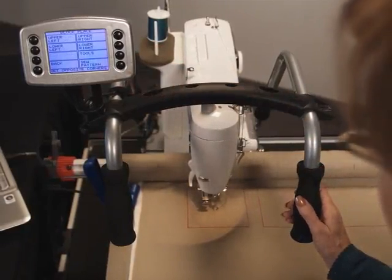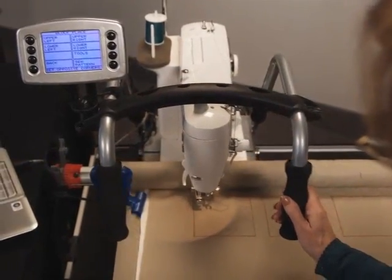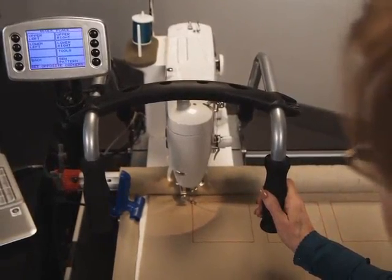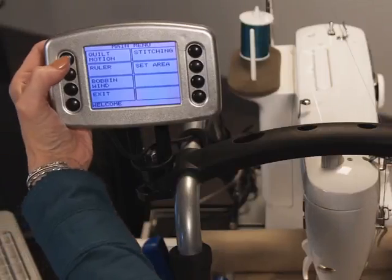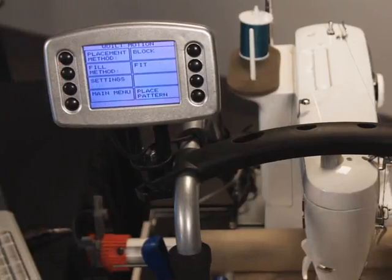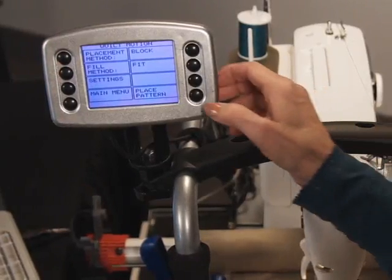First we'll demonstrate the different methods available for placing block patterns, showing the fit fill method first. Having selected the quilt motion button, you now push the place pattern button.